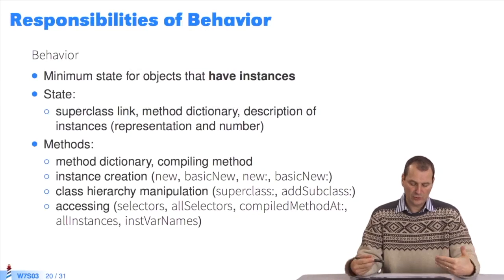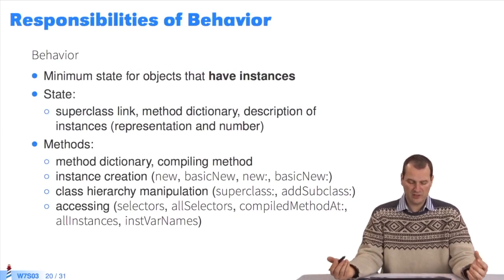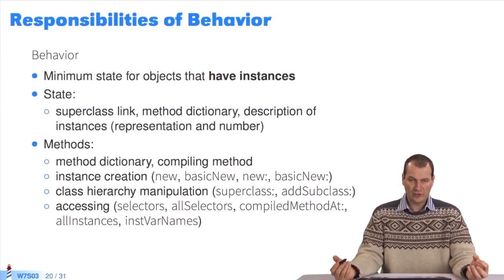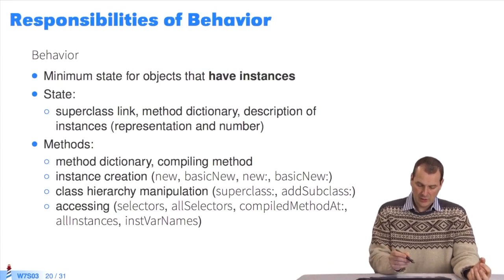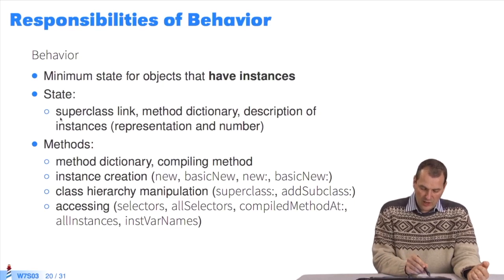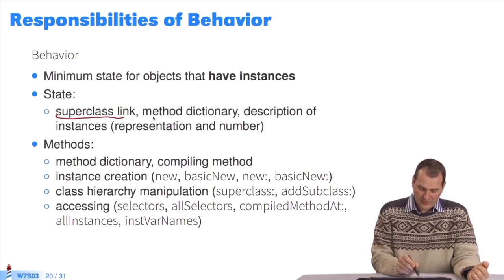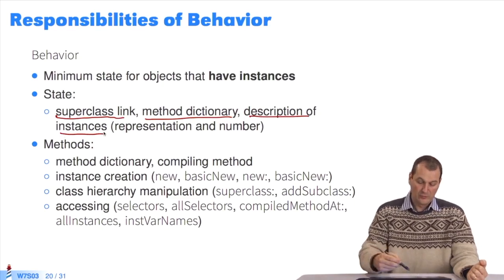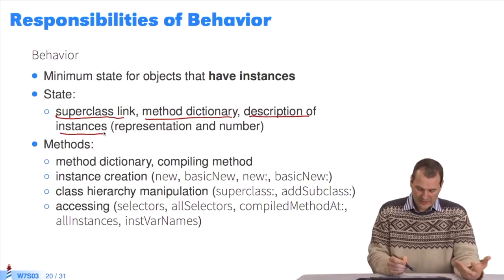In a nutshell, what does behavior represent? It's the essence of an object that can have instances. Objects with instances must include a superclass link, method dictionary, and description of instances format. The methods shown here include examples such as new, basicnew, and new colon.